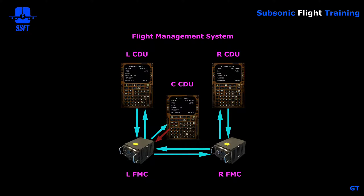On the earlier model airplanes, it would basically be a repeater of the left FMC information. The two FMCs also talk to one another so that if one FMC has a problem, it can re-synchronize and correct the problem of the other FMC. You may see a scratchpad message saying 're-syncing other FMC' — it takes a couple of seconds and they can straighten themselves out. Also, when we send information from one CDU, it goes to its respective FMC and then to the other FMC and then to the other CDU. So if you type something on one side, you'll see it on the other side.